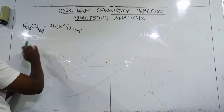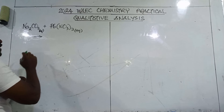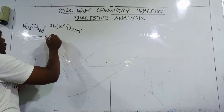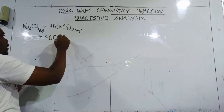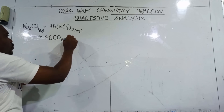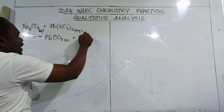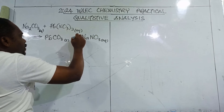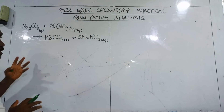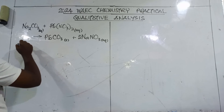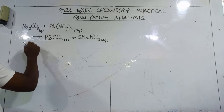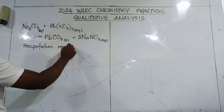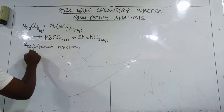When the solutions of these soluble salts are mixed together, you will get a precipitate — that is, PbCO3 (solid) plus 2NaNO3 (aqueous). This is a precipitation reaction, which you can also call a double decomposition reaction.